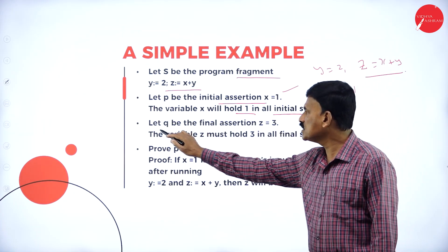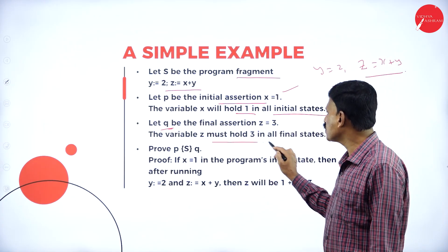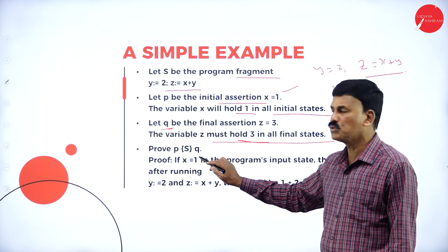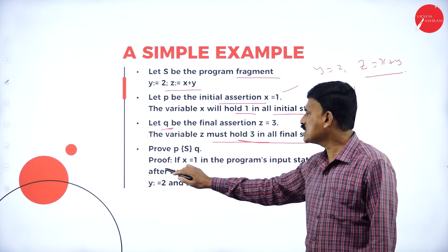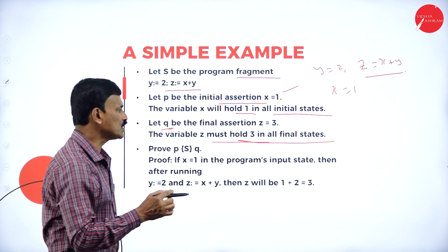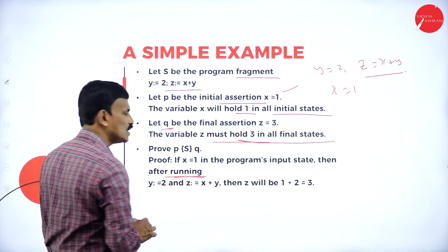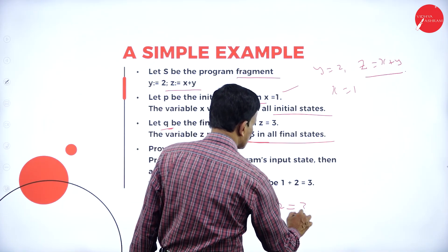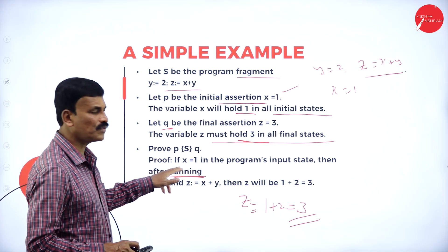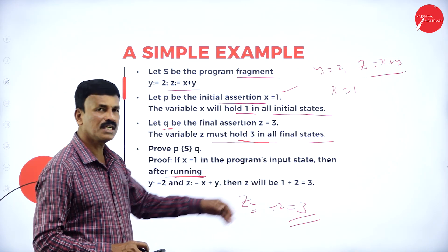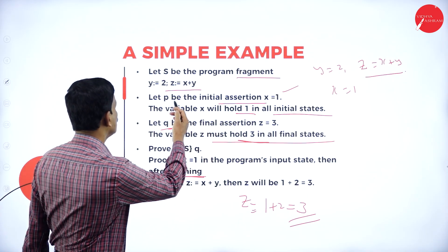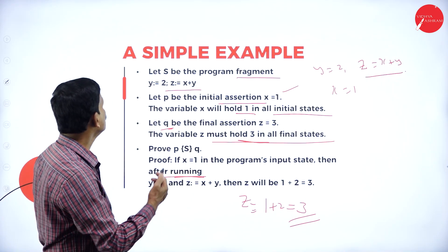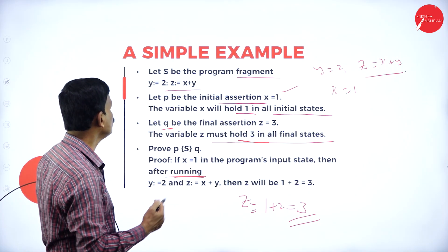Let Q be the final assertion: Z = 3. The variable Z must hold 3 in all final states. To prove P{S}Q: if X = 1 in the program's input state, then after running Y = 2 and Z = X + Y, the value of Z will be 1 + 2 = 3. This is a simple example of program fragment verification.